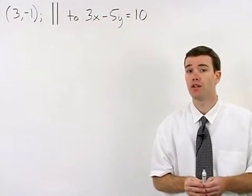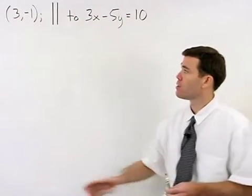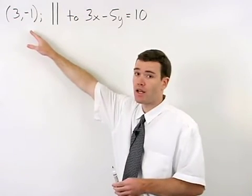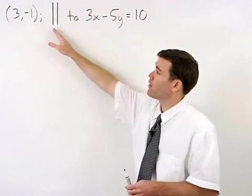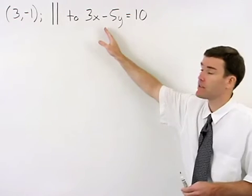In this problem, we're asked to write the equation of the line that passes through the point and is parallel to the line that has the equation.